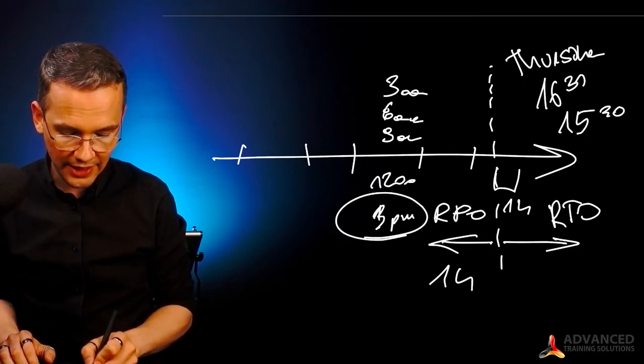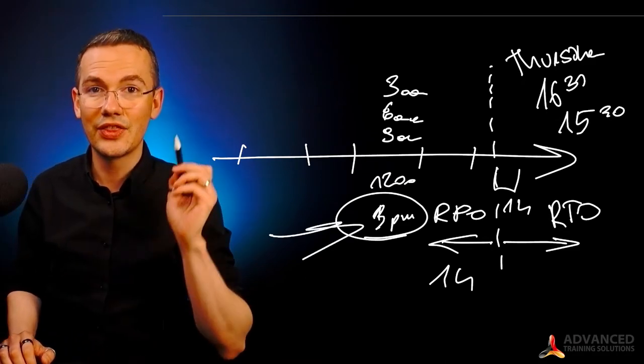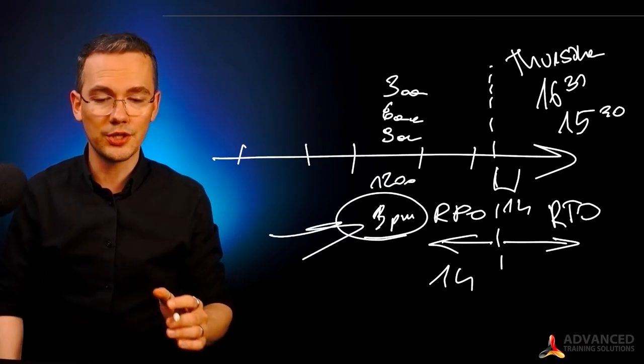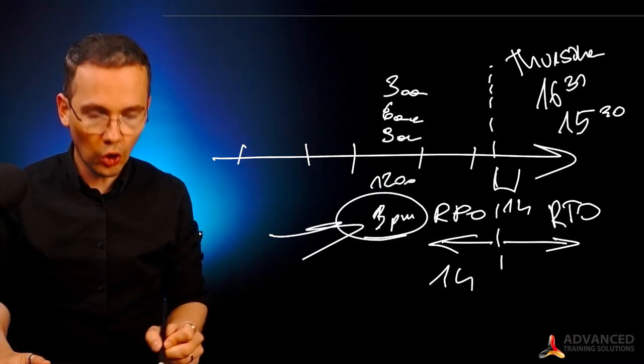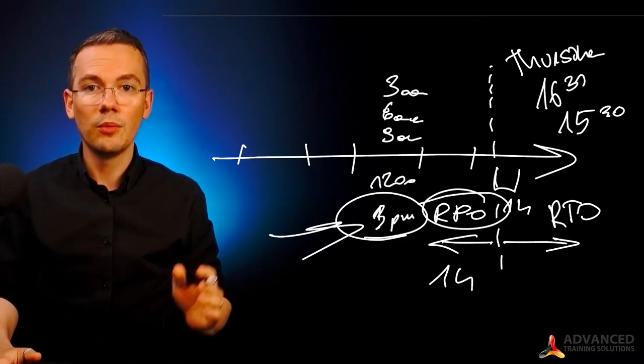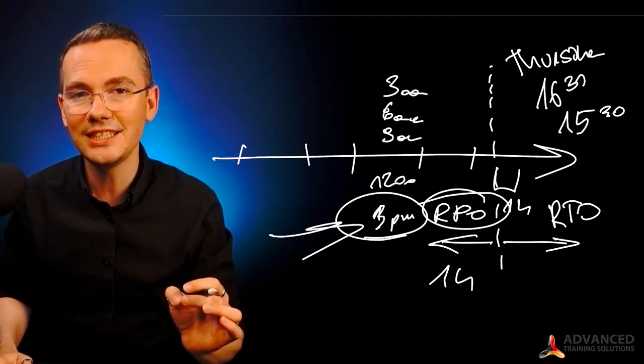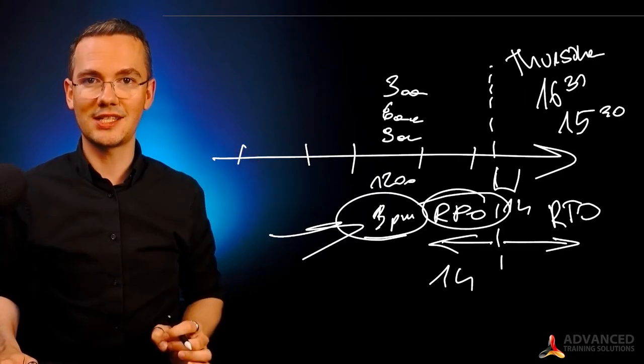Now if my latest backup, my last backup was taken at 3 PM, at 1500, it means that I'm not meeting my RPO, because this way I would lose 90 minutes of work, not just 60.